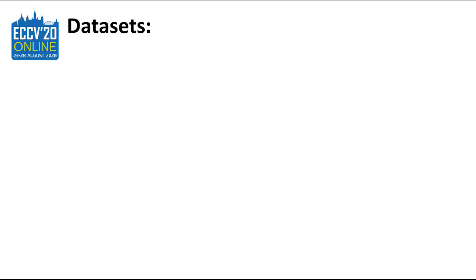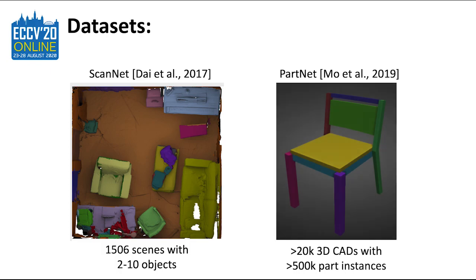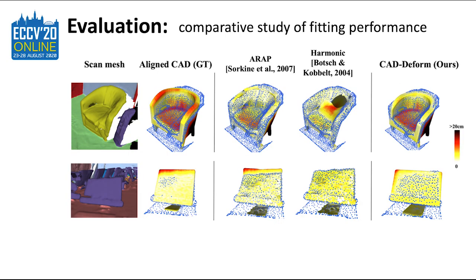We built upon two datasets: ScanNet, a richly annotated RGBD collection of indoor scene reconstructions, and PartNet, which contains part-annotated synthetic CAD models that we use for alignment to the scenes. Here we represent the deformations obtained using our method and the baselines, with color indicating distance to the closest scan points. Evidently, all methods increase the fit to the scan.